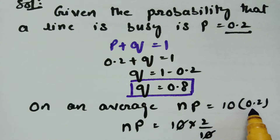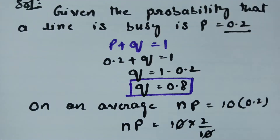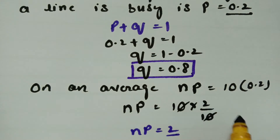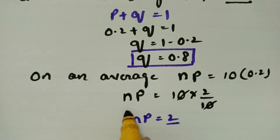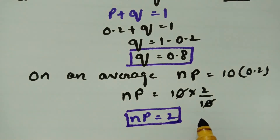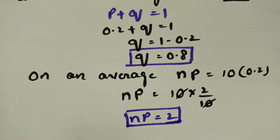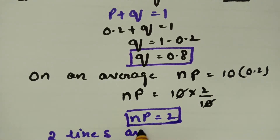On average, the mean np is equal to 10 into 0.2, which is 10 into 2 by 10. Cancelling, the mean value np is equal to 2. With this we conclude that two lines are busy at an instant.